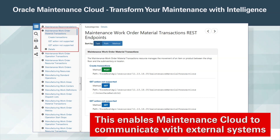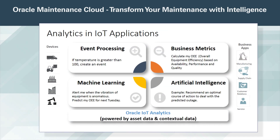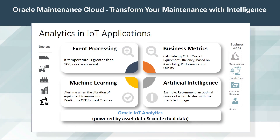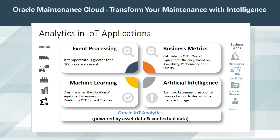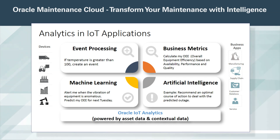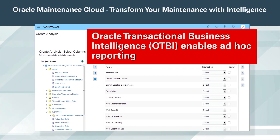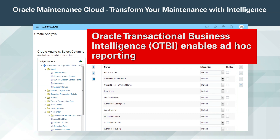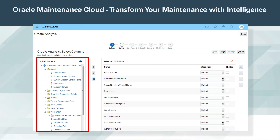Maintenance Cloud's integration with Oracle Internet of Things (IoT) applications helps support predictive and prescriptive maintenance methodologies by addressing the following: predict when assets or parts will fail; predict the cost of maintenance; optimize planned maintenance intervals; predict the optimal maintenance schedule for an asset; predict root cause of failure based on symptoms; predict which part to replace to fix a problem; predict optimal action plan to resolve a problem; and detect anomalies in cost, quality, and utilization — and much more. Oracle Transactional Business Intelligence enables ad-hoc reporting. Note the subject areas available from Maintenance Cloud.